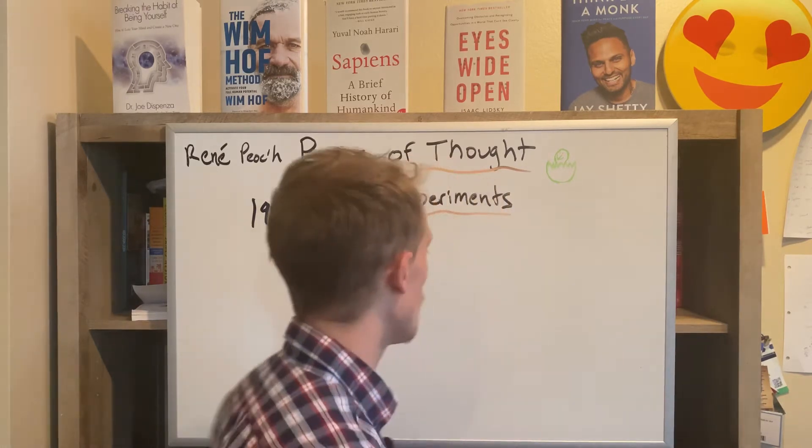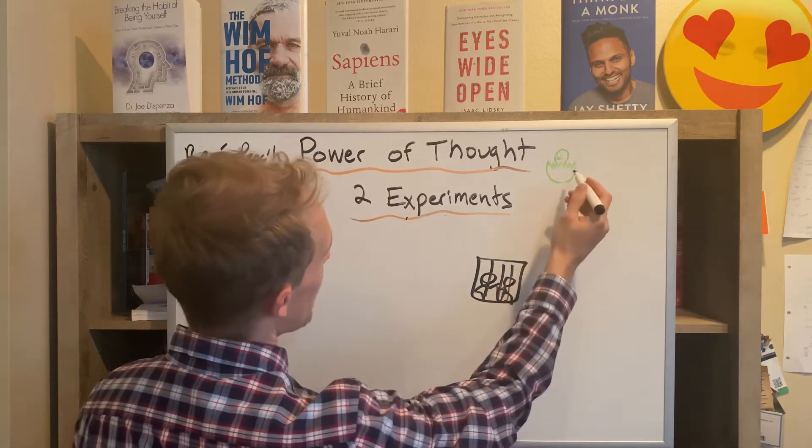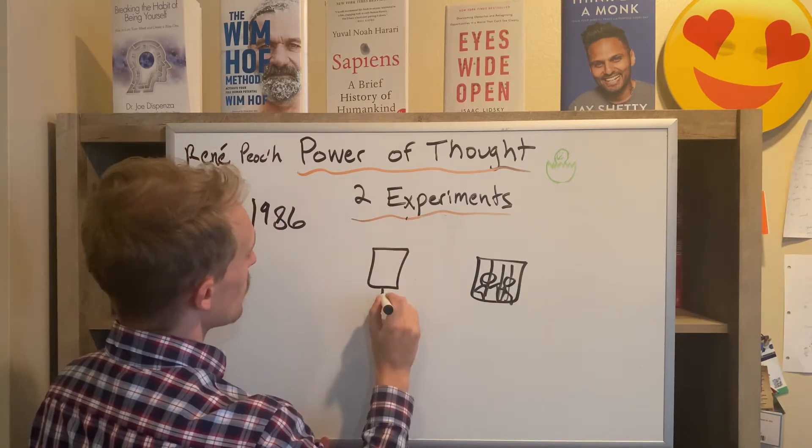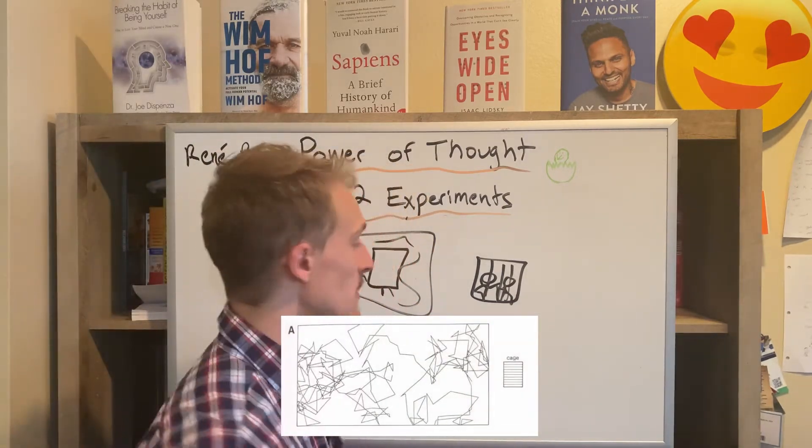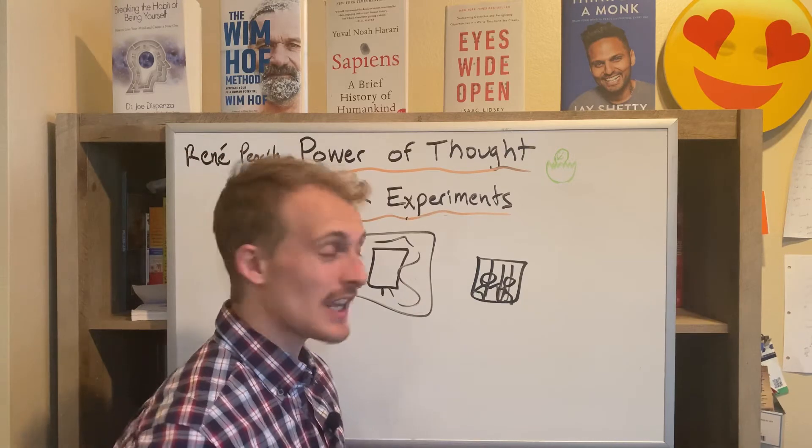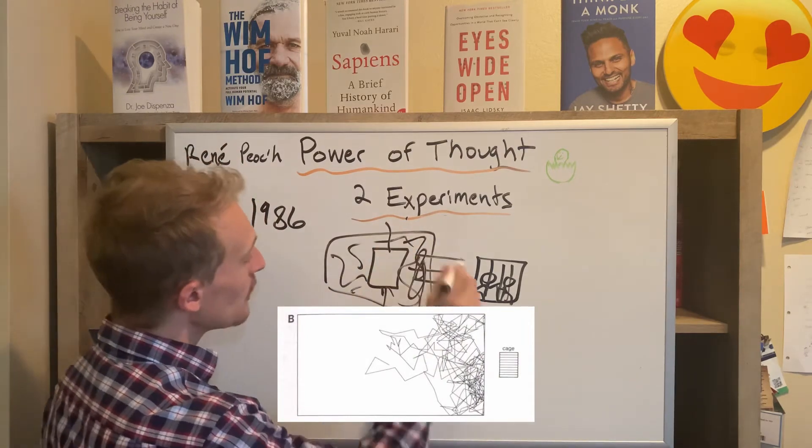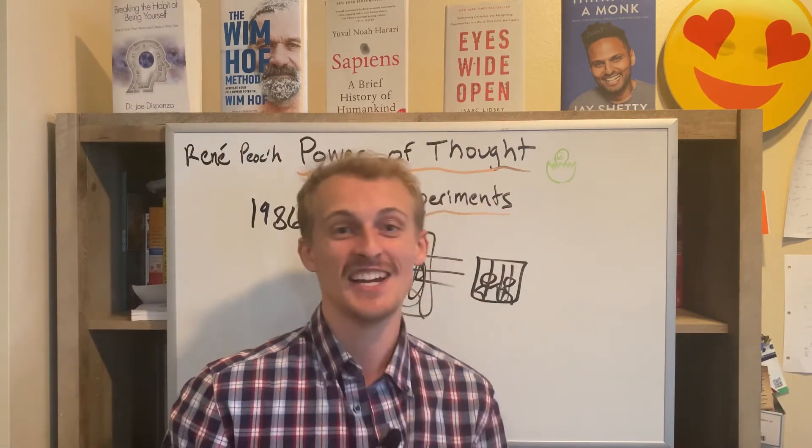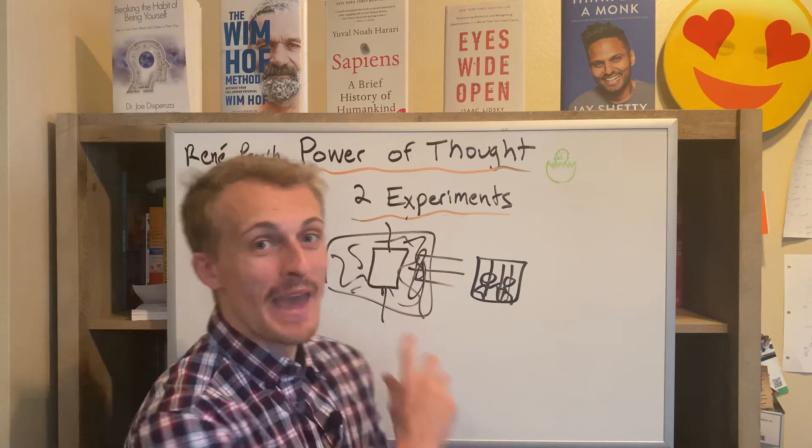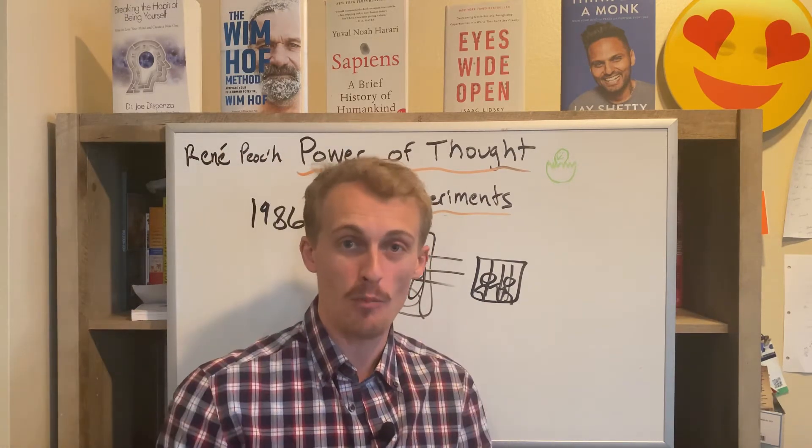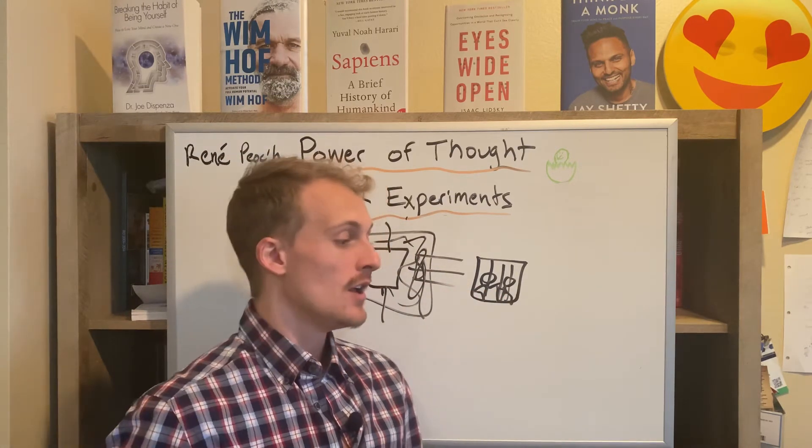What he did is he took 15 chicks, put them in a cage, and they had a random number robot in a room that would go zigzagging all over the place. In the controls, that's exactly what it did. Then when they put the baby chicks in a cage next to it, all of a sudden this robot only stayed on this right side, and it was statistically significant to the point that these baby chicks, through thought and will, were making a random number generating robot come more towards them than anywhere in the room, which is insane.